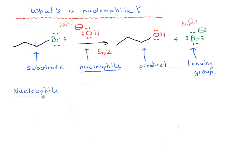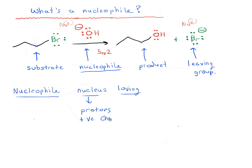If we look at the word nucleophile, it comes from two words: nucleus and loving. 'Nucleo' comes from nucleus. When you think about the nucleus, it contains protons and neutrons — neutrons don't have any charge, so we really care about the protons, which are positively charged. So nucleophiles love positive charge, and this makes sense because the basis of chemistry is that opposite charges attract and like charges repel.